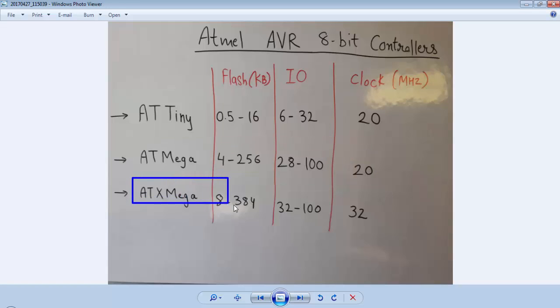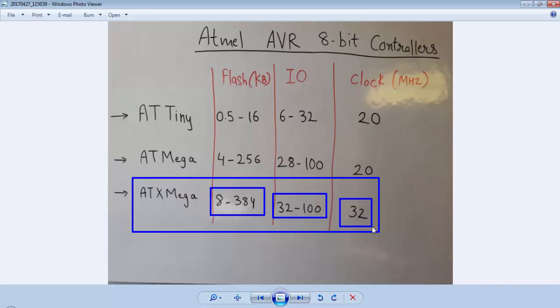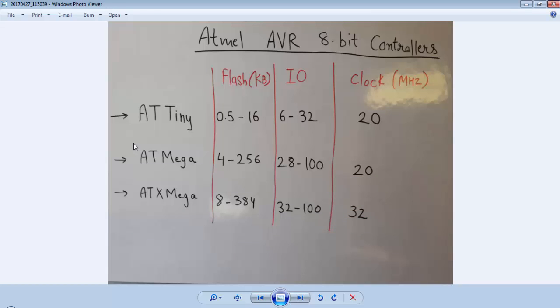The other most popular series under the 8-bit AVR microcontroller is ATXMEGA with minimum of 8 and maximum of 384 KB of flash memory with minimum of 32 to maximum 100 pins for input-outputs and maximum clock frequency rated at 32 MHz.